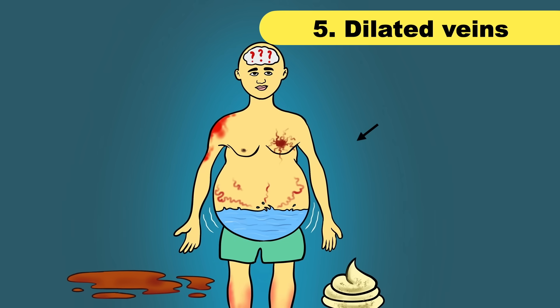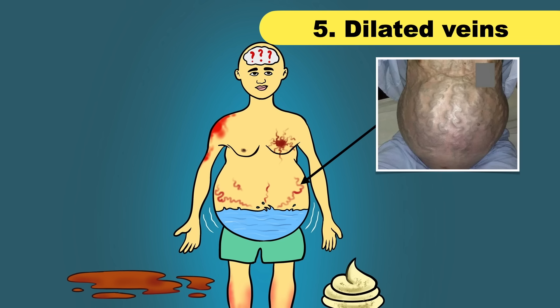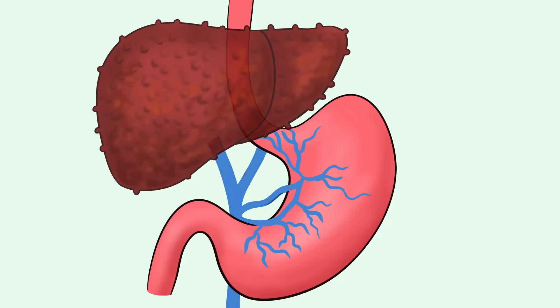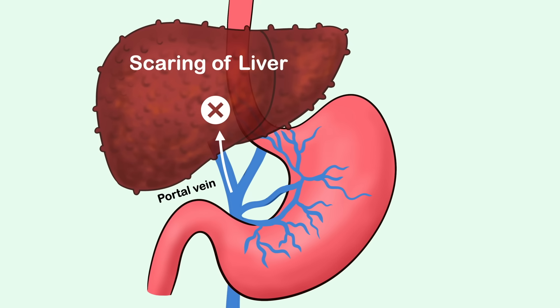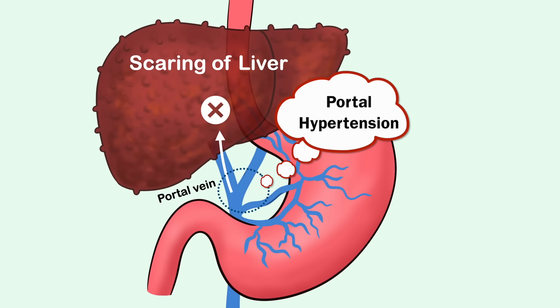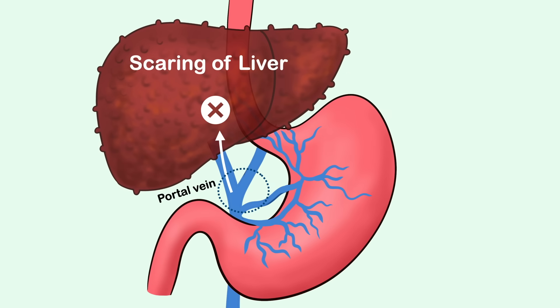Sometimes you may notice painless swollen veins around your belly button, commonly seen in liver cirrhosis. Scarring in liver cirrhosis makes it harder for blood to flow through the veins of the liver, leading to backup of blood in the portal vein and portal hypertension. With nowhere else to go, some blood flows through the nearby peri-umbilical veins, which can be seen through the skin.